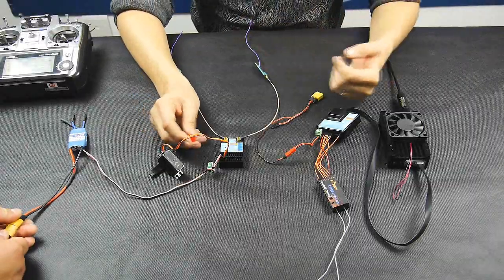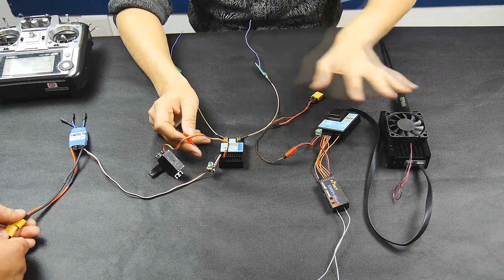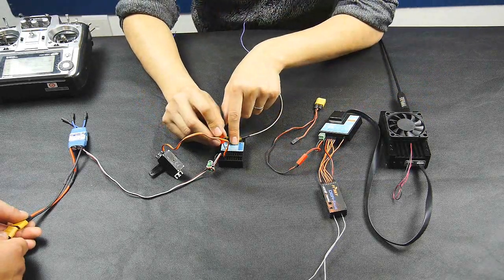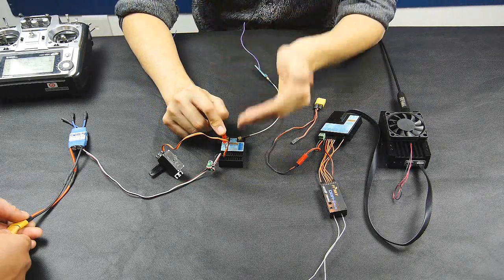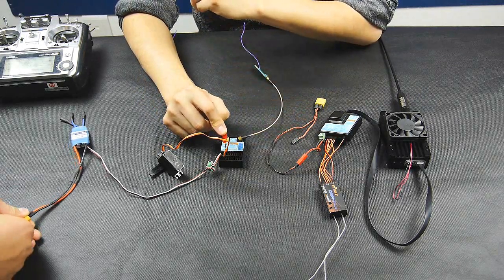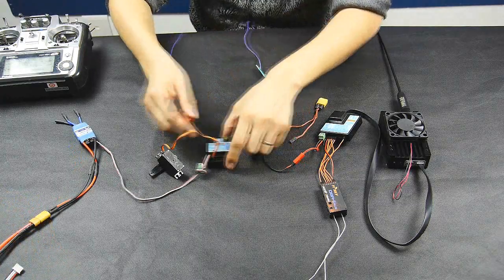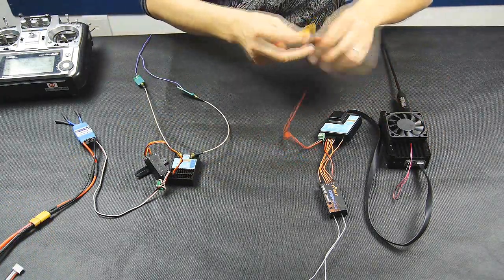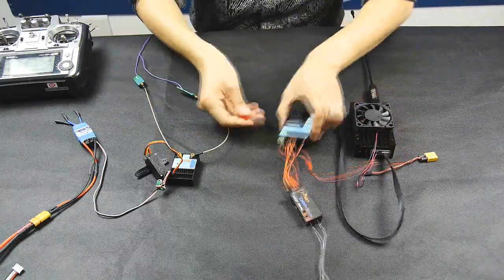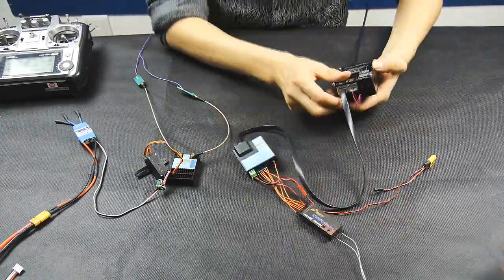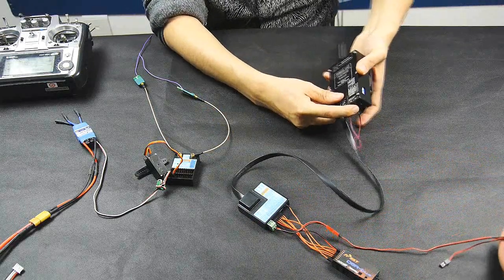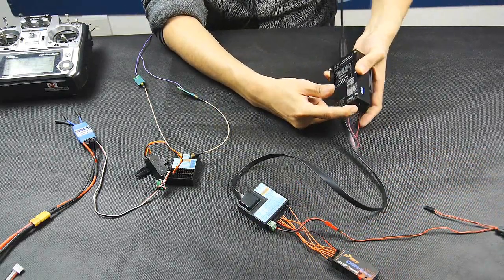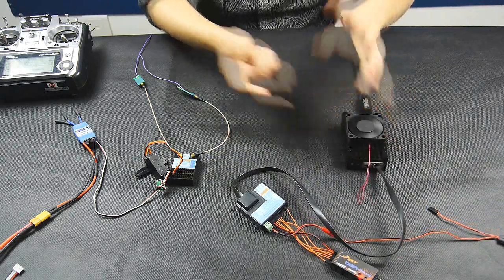Now I'm going to show you how to bind the receiver module with the transmitter module. First use a screwdriver to press on the bind button and power the receiver module. You can see LEDs are flashing. And then I'm going to use another battery, and then I'm going to press the PB1 button and power on the transmitter module.